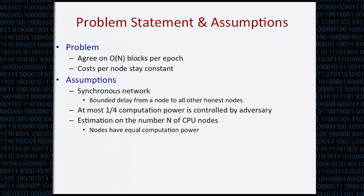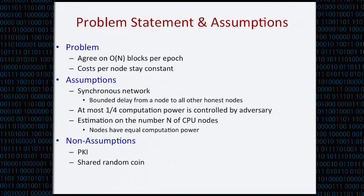We want to solve this problem under realistic assumptions. First, we assume the network is synchronous — there is a known bounded delay when a node sends a message to other nodes. We assume at most one quarter of the computation power in the network is controlled by the adversary. These assumptions are practical: Bitcoin relies on the same set of assumptions, as does much prior work. We also assume a rough estimation of the number N of CPU nodes, and all nodes have equal computation power. Notably, we do not assume any PKI system or a shared random coin between all network participants, as these assumptions are impractical in open networks.